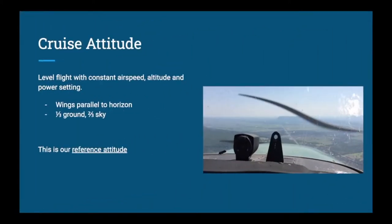Here's a diagram showing the cruise attitude. In level flight at a constant airspeed and altitude, power is set to cruise, wings are parallel to the horizon. Looking forward, you'll see about one-third ground and two-thirds sky. Note the distance from the nose to the horizon — approximately three to four fingers if you hold your hand out in front of your face. That establishes your cruise attitude.